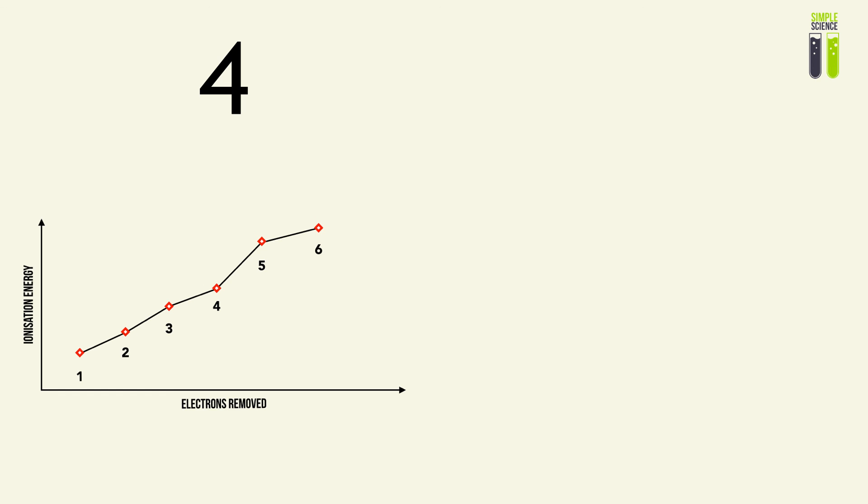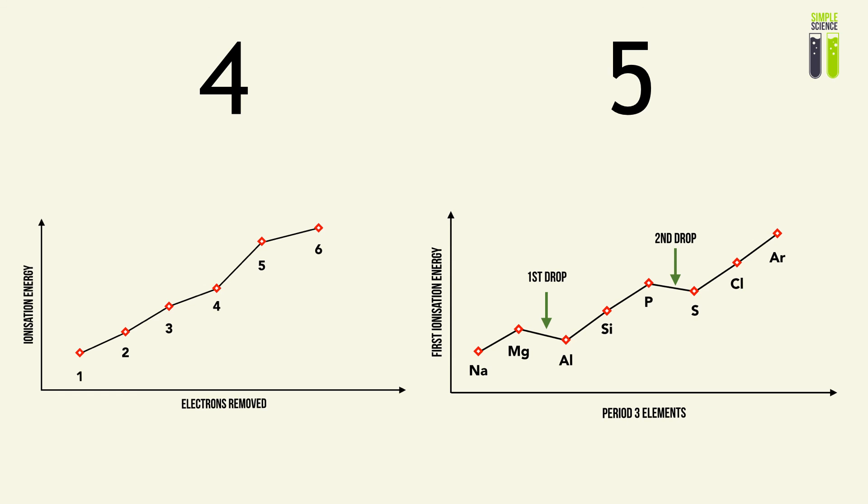The first ionization energy would be lower than the second ionization energy which will be lower than the third ionization energy and so on. You must be able to understand the drops of first ionization energy across periods, especially for period three, through understanding its electronic structure and explaining how it outweighs the effect of increase in proton number.